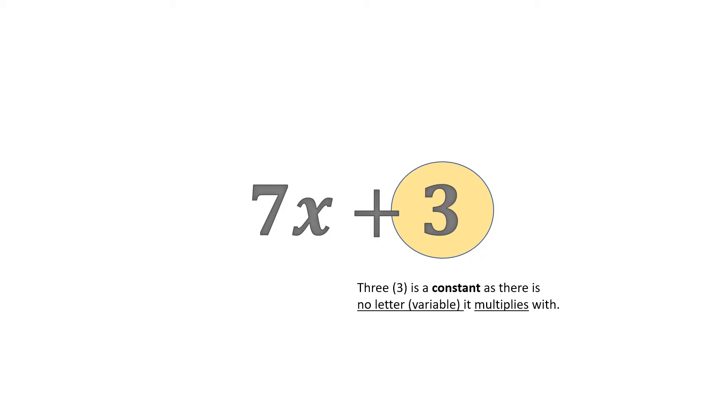as we saw 7x, 7x is a variable. 7 cannot be seen as a constant, 7 is something else, but we're going to get to that now.